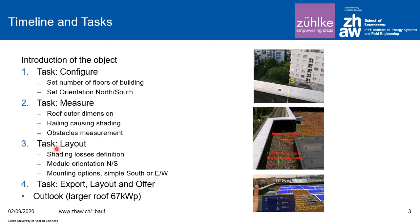Third, the layout is done by choosing the orientation and finding the type of mounting structure — east, west, or south — and also selecting the amount of shading losses that will be allowed. Then the PV modules are displayed on the roof and the optimum planning is chosen.